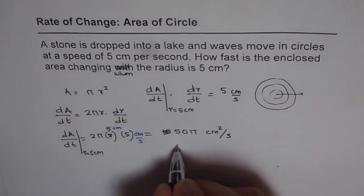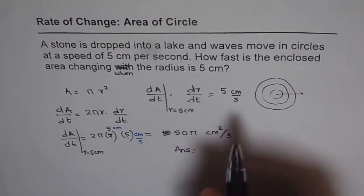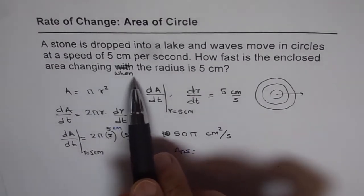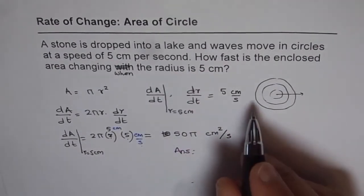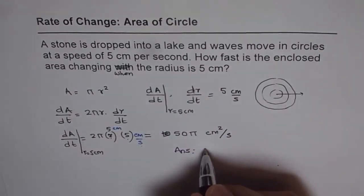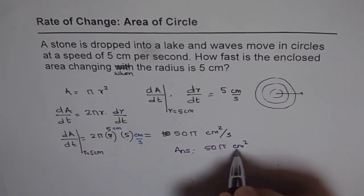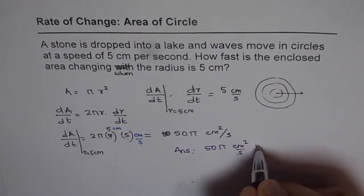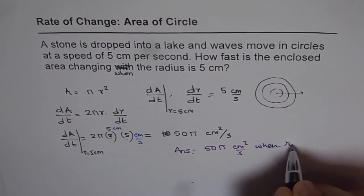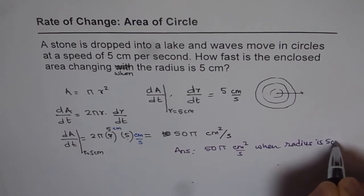So the answer is, how fast is the enclosed area changing when the radius is 5 cm? Enclosed area is changing at the rate of 50π centimeter square per second when radius is 5 cm.